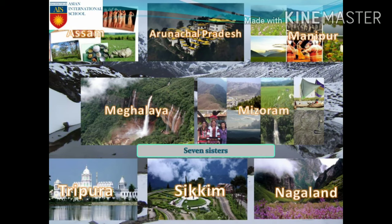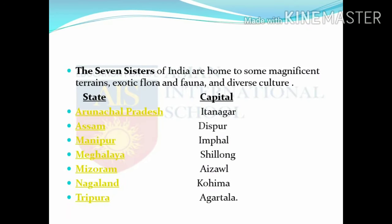In this slide, we will see the beauties of Assam, Arunachal Pradesh, Manipur, Meghalaya, Mizoram, Tripura, Sikkim and Nagaland. Though Sikkim is one of the North East states, it is not one among the Seven Sisters. The Seven Sisters are home to magnificent terrains, exotic flora and fauna and diverse culture. The states and their capitals are: Arunachal Pradesh - Itanagar, Assam - Dispur, Manipur - Imphal, Meghalaya - Shillong, Mizoram - Aizawl, Nagaland - Kohima, Tripura - Agartala.